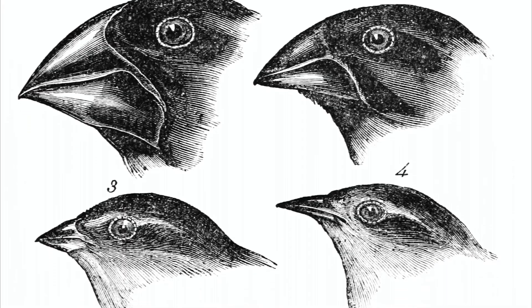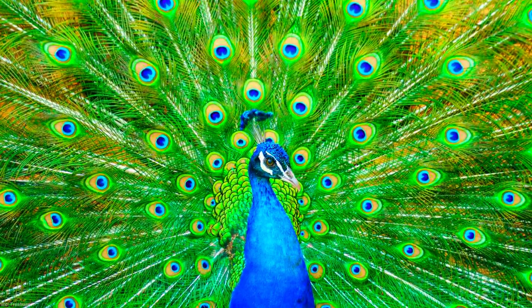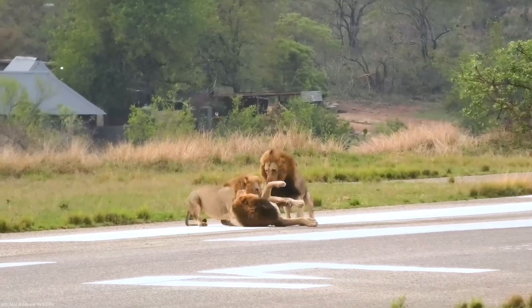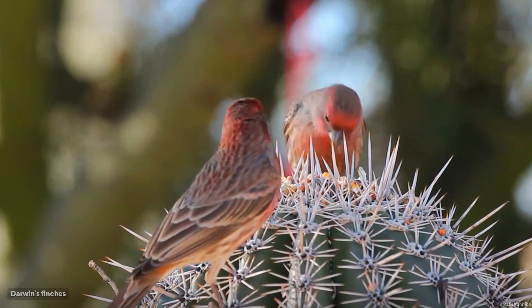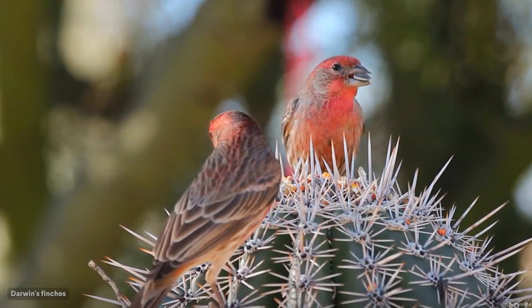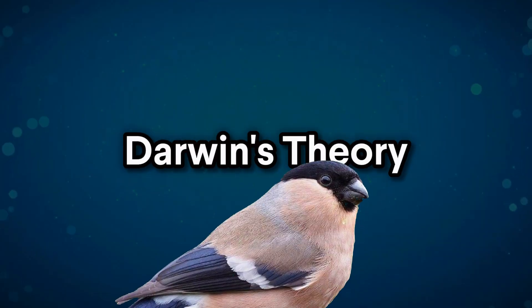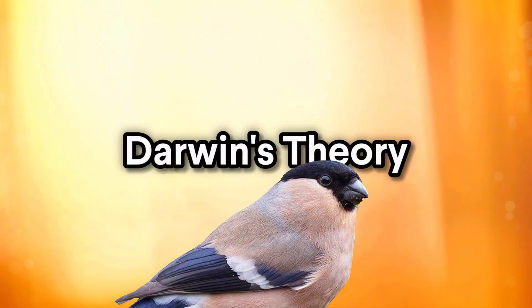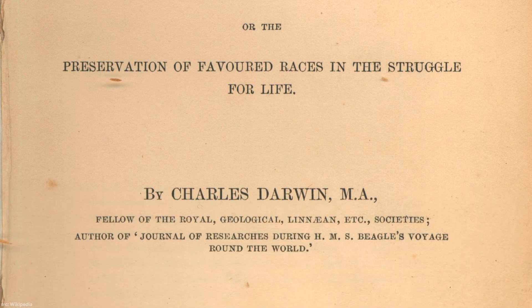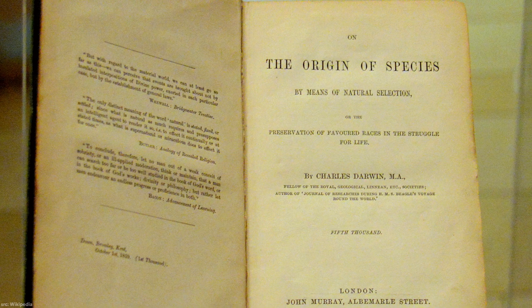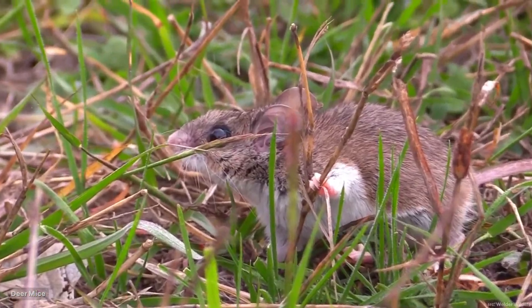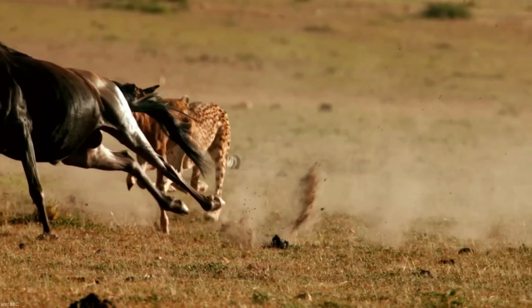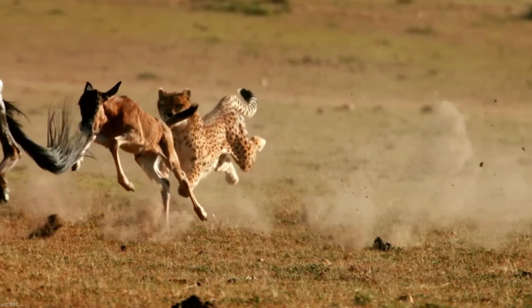George Williams explains that natural selection accurately reflects the concept, as it is not simply about survival of the fittest, but rather the survival of suitably adapted individuals. Darwin's 'The Origin of Species' is a significant scientific literature piece that introduces the theory of natural selection and the principle of survival of the fittest.